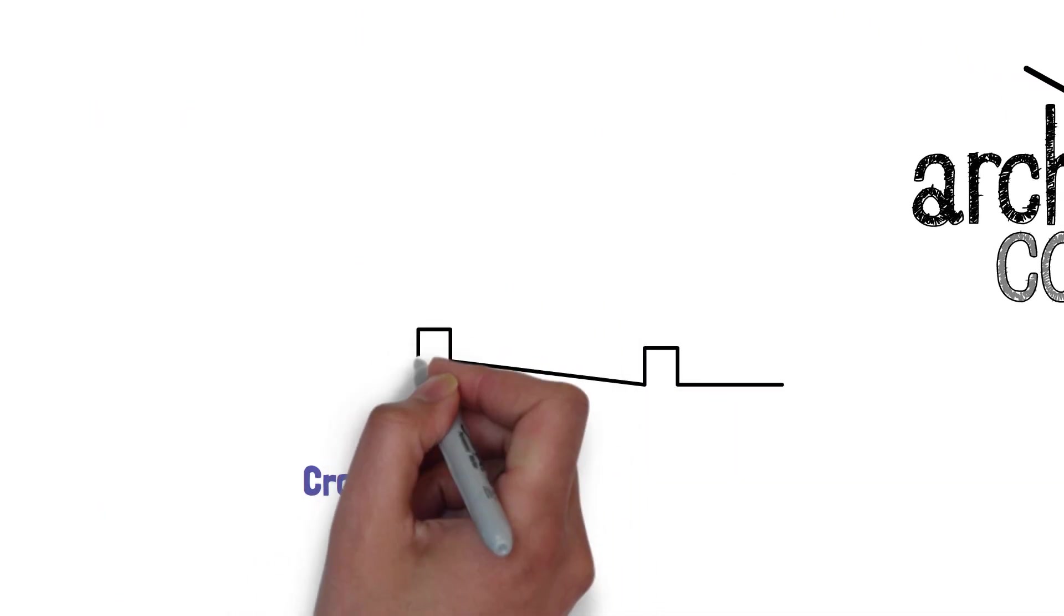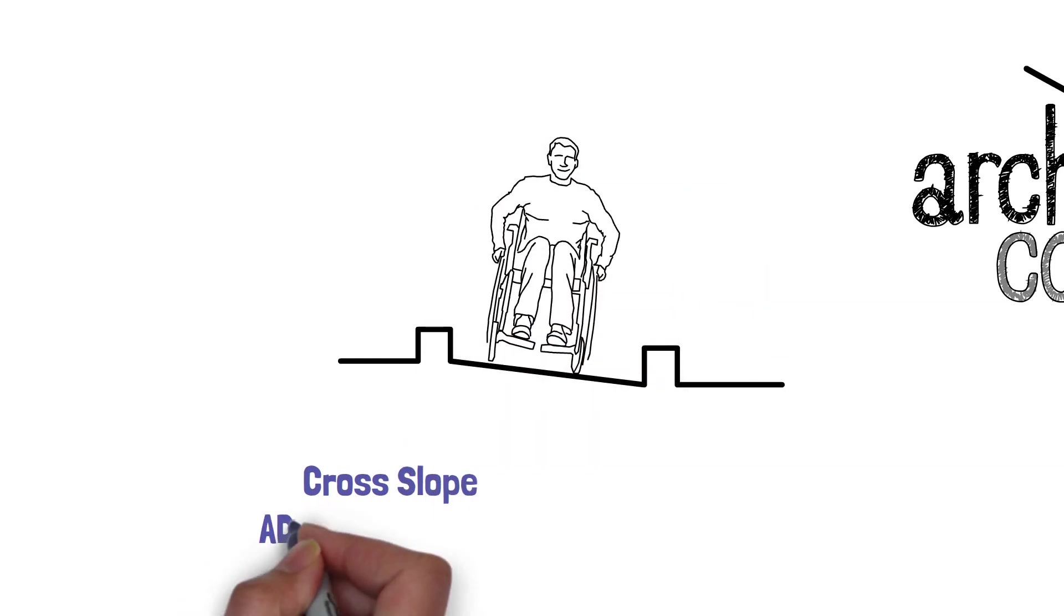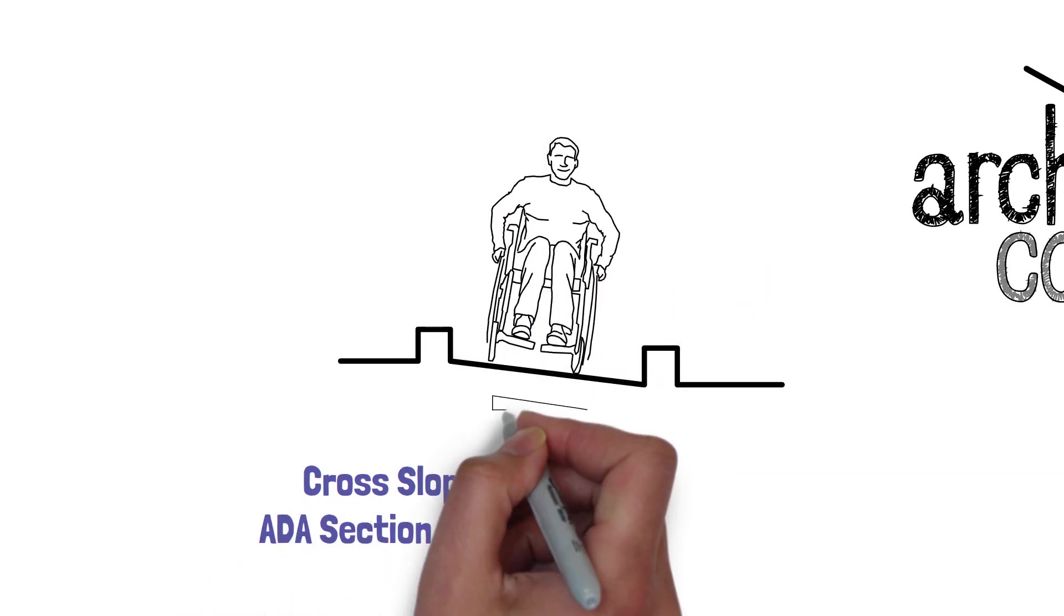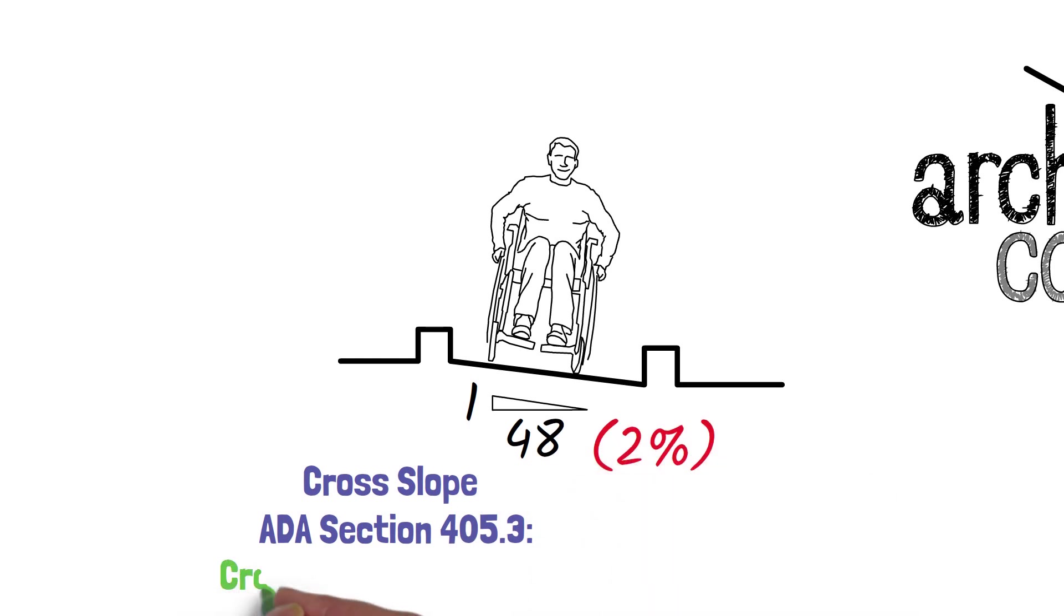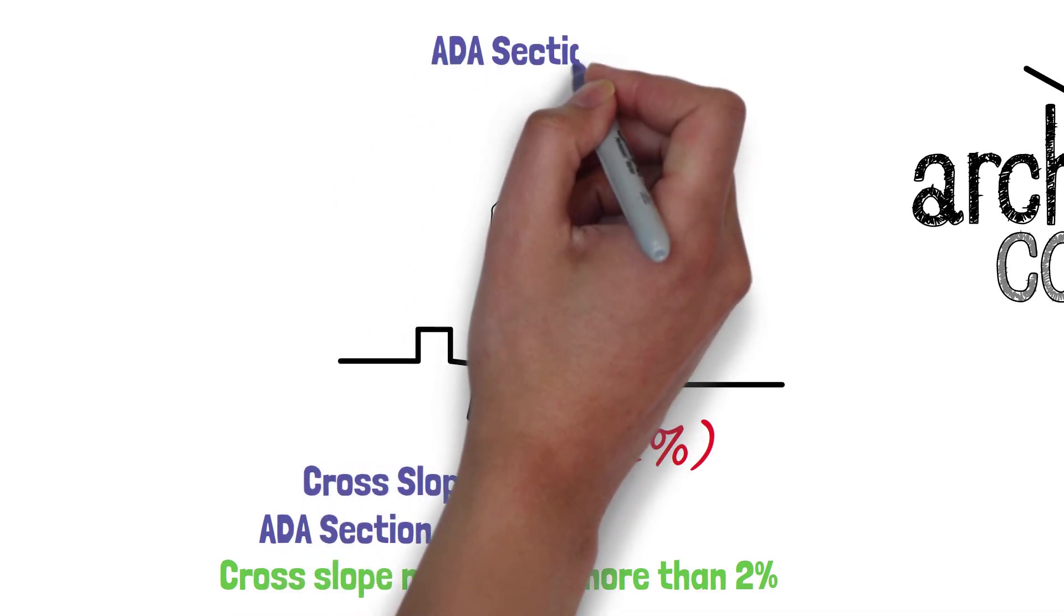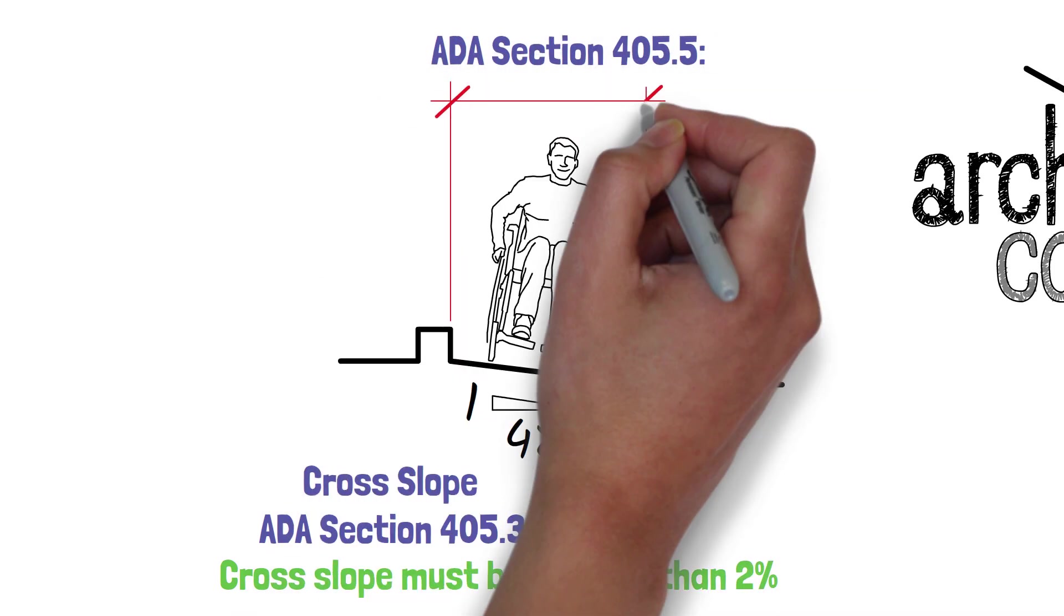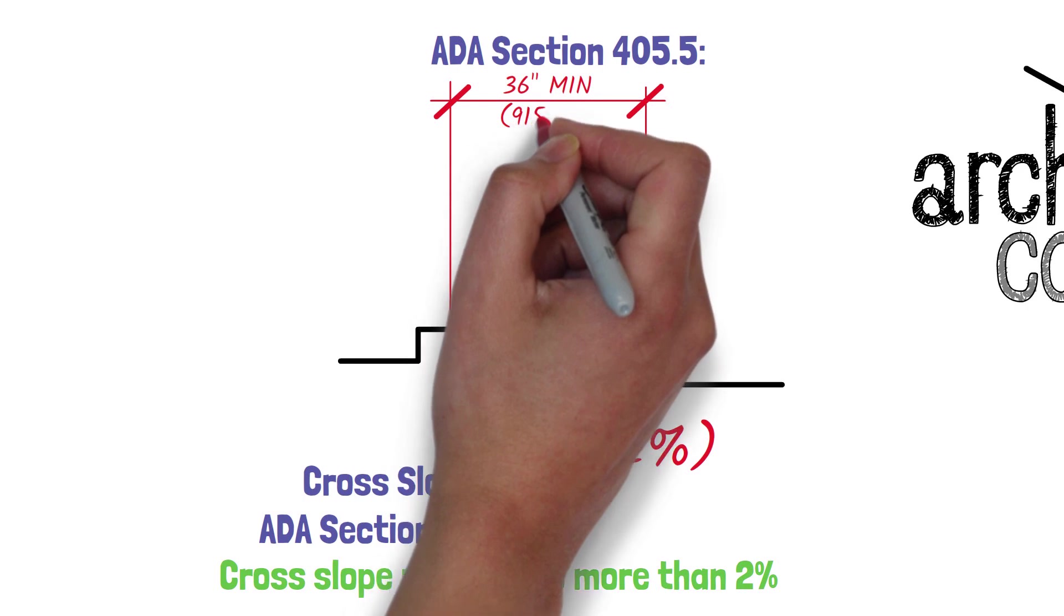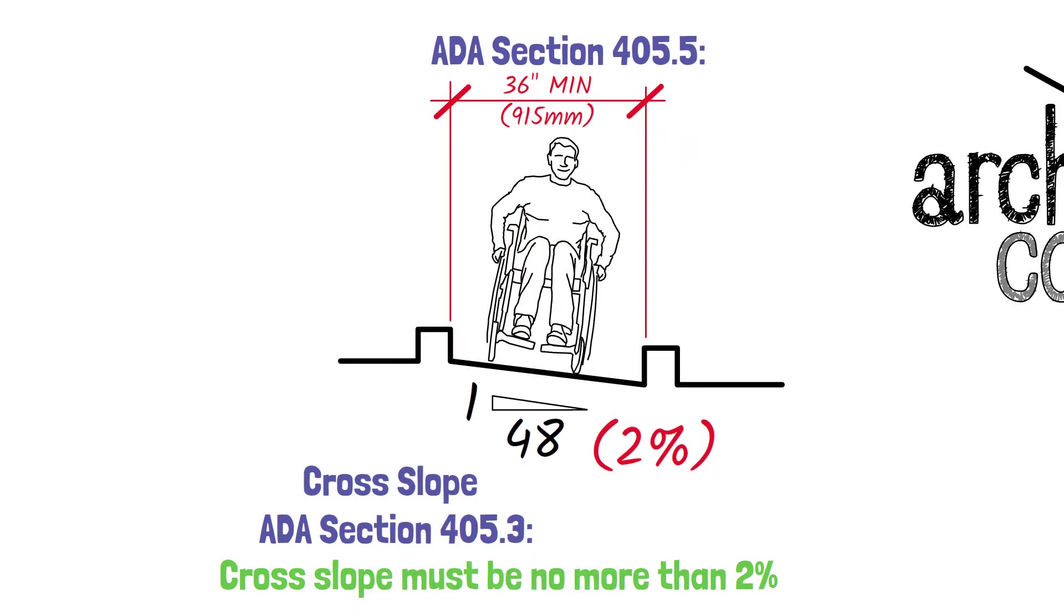Speaking of slopes, what about a cross slope? That is also important. Per ADA Section 405.3, the cross slope cannot be steeper than 1 in 48 or 2%. Since we are in this cross section view, per ADA Section 405.5, the width of a ramp must be 36 inches minimum.